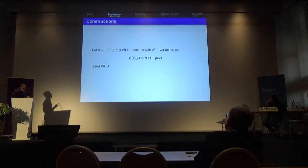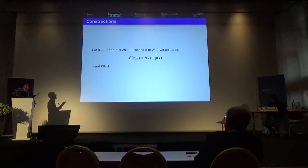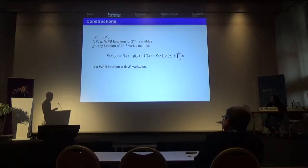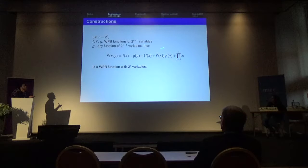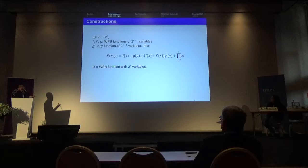We also know — referring to the paper — that we cannot construct WWPB functions by simply adding two WWPB functions with independently taken inputs. However, we have a slightly modified construction: take n = 2^l, and f, f' and g as weight-wise perfectly balanced functions on 2^(l-1) variables. If you take g' to be zero, then you get f(x) + g(y) + ∏xi, where ∏xi is the product of all variables in x. This function is a weight-wise perfectly balanced function on 2^l variables, allowing us to build many such functions.